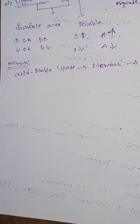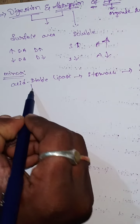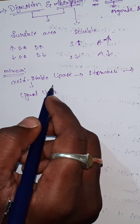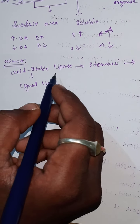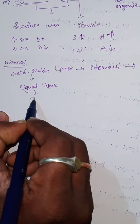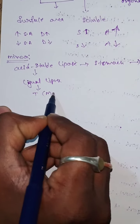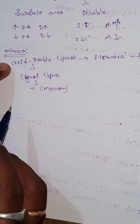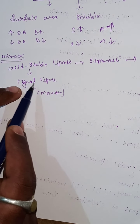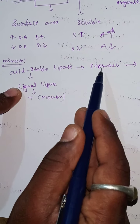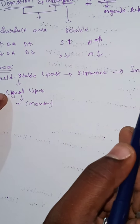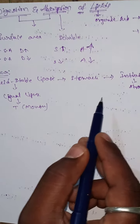This enzyme is also known as lingual lipase. Lingual lipase is present in the tongue, in our mouth. The acid-stable lipase enzyme is secreted from the mouth and is also known as lingual lipase. It catalyzes the initiation of digestion in the stomach — this is the minor digestion part.